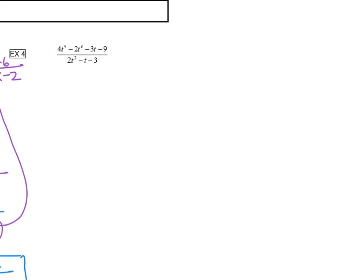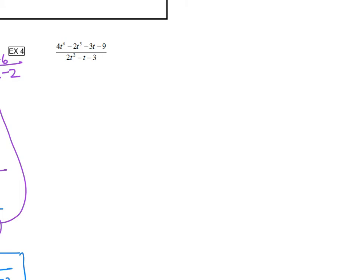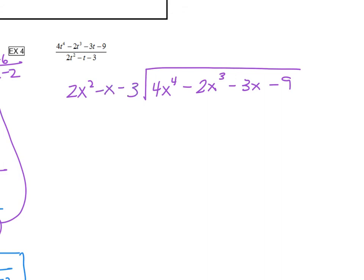Next one. Let's rewrite this in long division form. I'm going to change the t's to x's. So 4x to the 4th minus 2x cubed minus 3x minus 9 is all being divided by 2x squared minus x minus 3. Even though we have three terms out here, that's okay — we're still going to focus on the first ones. 2x squared times what gives us 4x to the 4th? That is going to be 2x squared. Then we multiply: 2x squared times 2x squared is 4x to the 4th, and 2x squared times negative x is negative 2x cubed, and 2x squared times negative 3 is negative 6x squared.